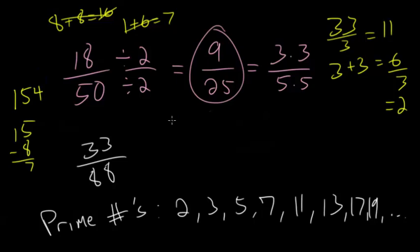But for something like 33, we would double the last digit, make it 6, subtract that from 3, you get negative 3. But negative 3 is not divisible by 7.